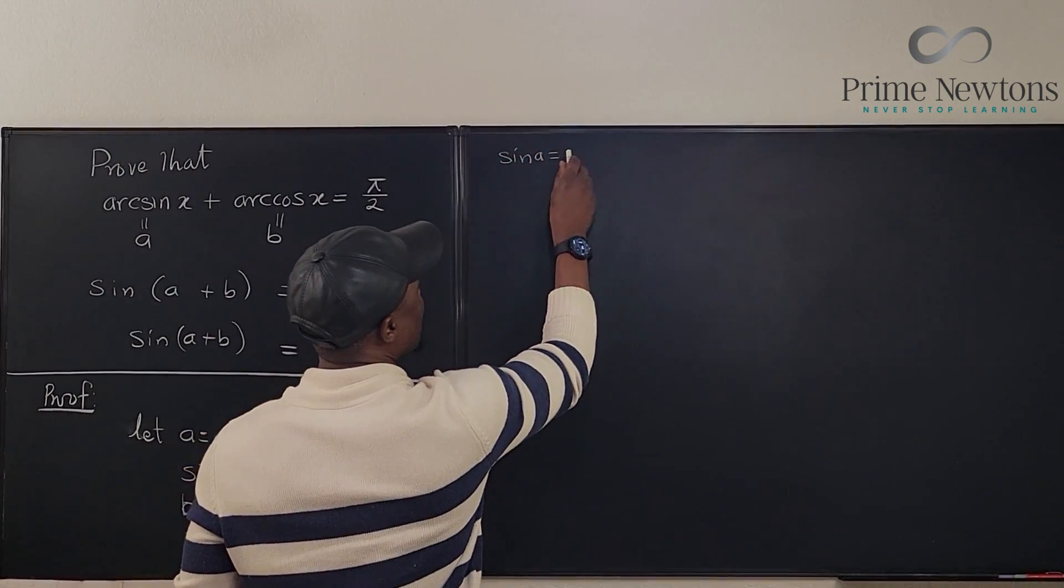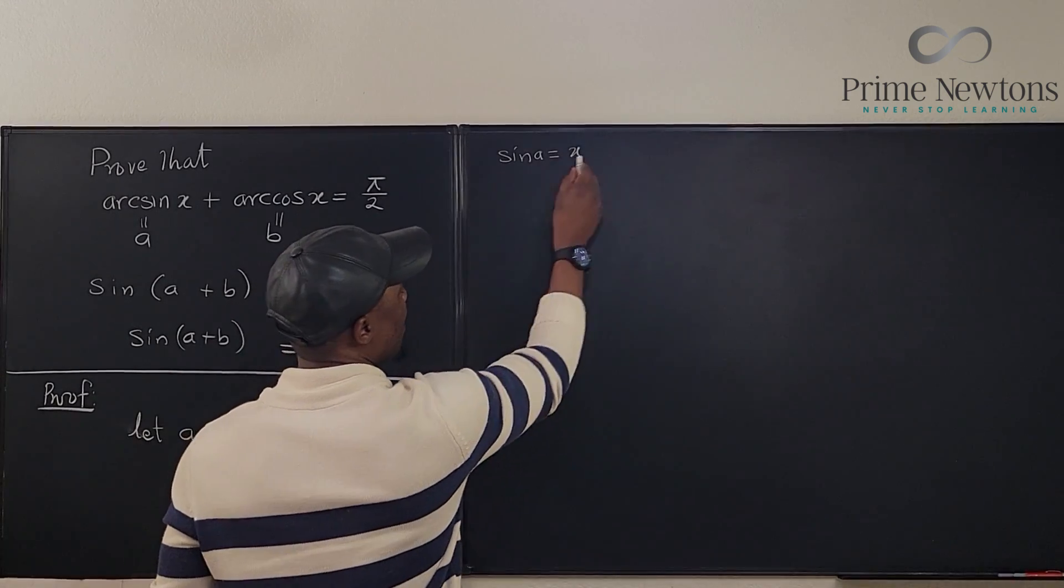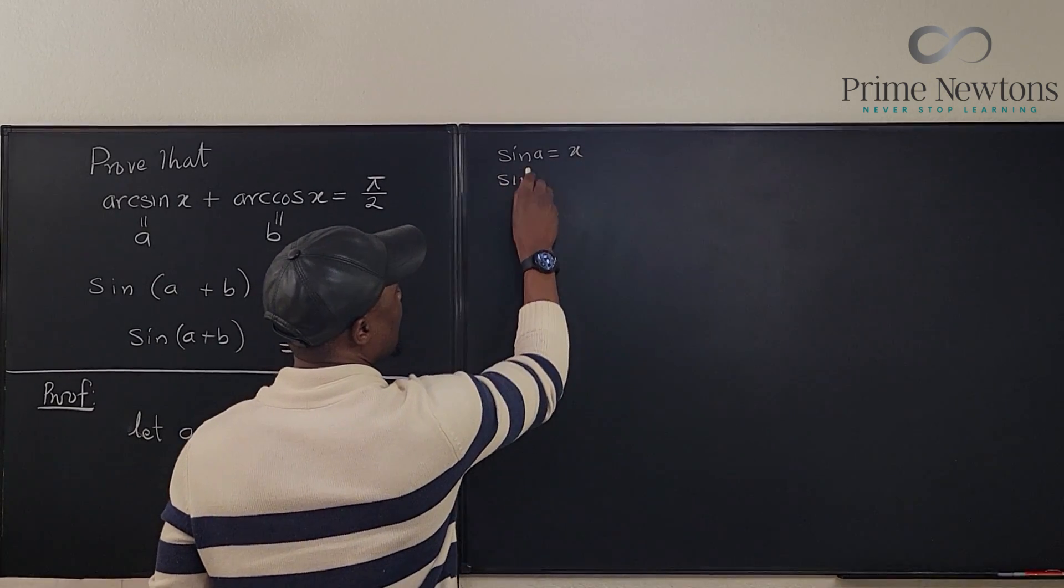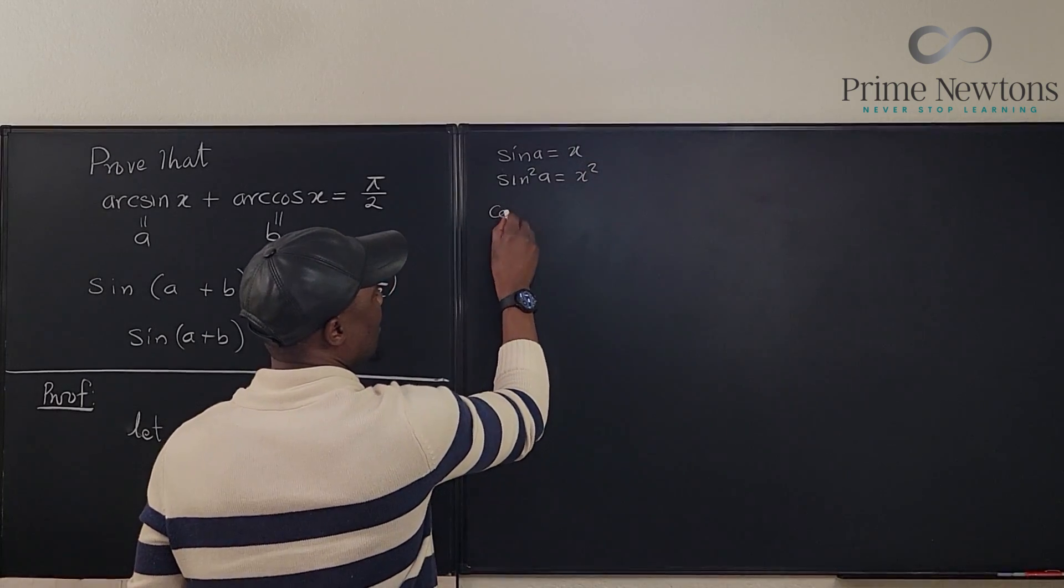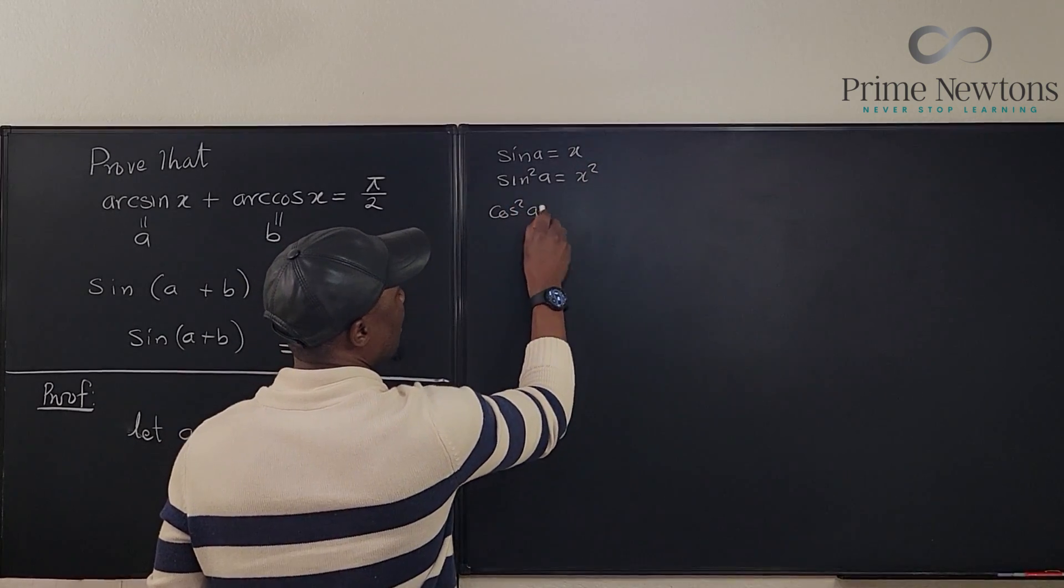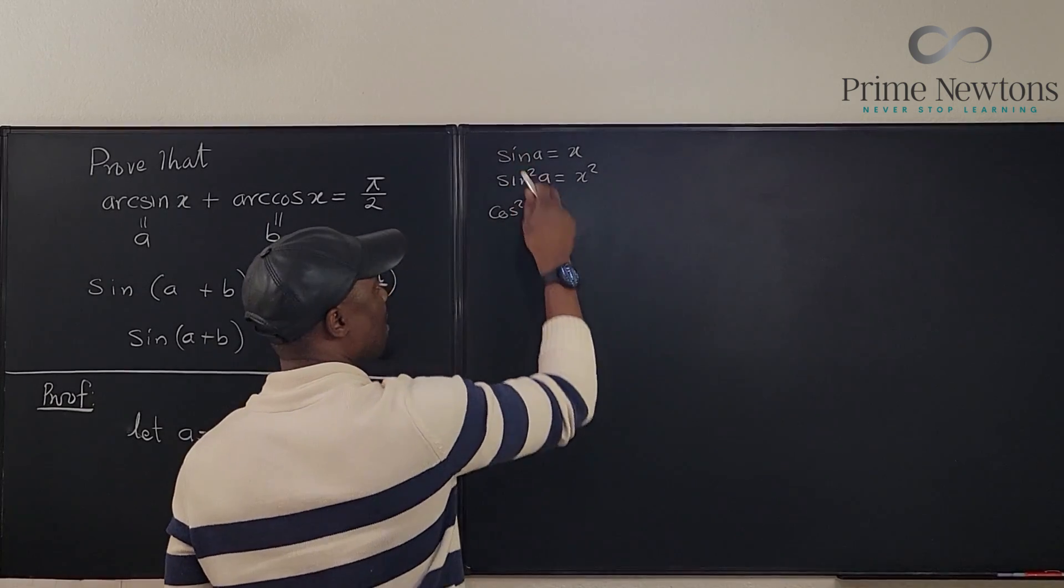Sine a is equal to x. Then we know that sine squared a will be equal to x squared. That means that cosine squared a will be equal to 1 minus sine squared a.